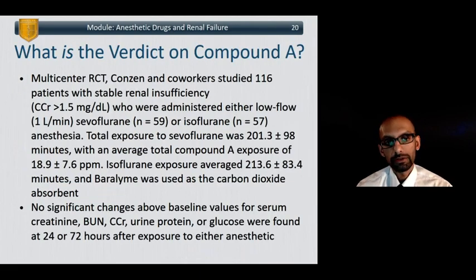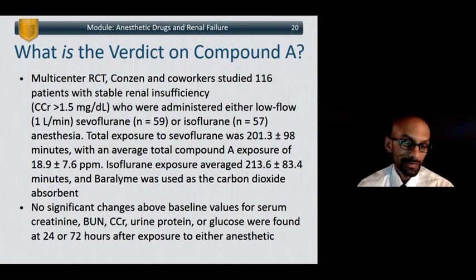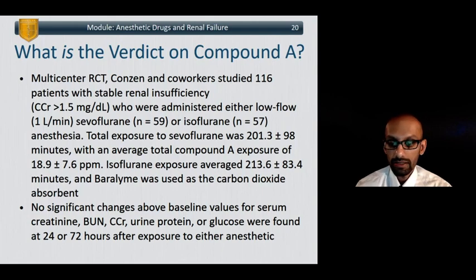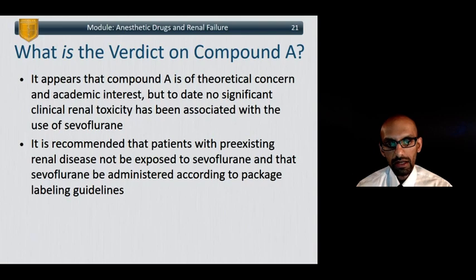The same goes for compound A. In fact, randomized controlled trials compared isoflurane and sevoflurane head-to-head in patients with renal insufficiency using low-flow anesthesia and baralyme — essentially stacking the deck with risk factors for higher compound A concentrations. They found no changes from baseline values for creatinine, BUN, creatinine clearance, urine protein, glucose, or any other index of renal toxicity, and concluded it is generally safe to use sevoflurane in patients with renal failure without worry of compound A toxicity. Be aware that sevoflurane manufacturers still include package labeling guidelines stating the drug should not be used in patients with renal failure or renal disease — that's a package insert guideline, not a society guideline.